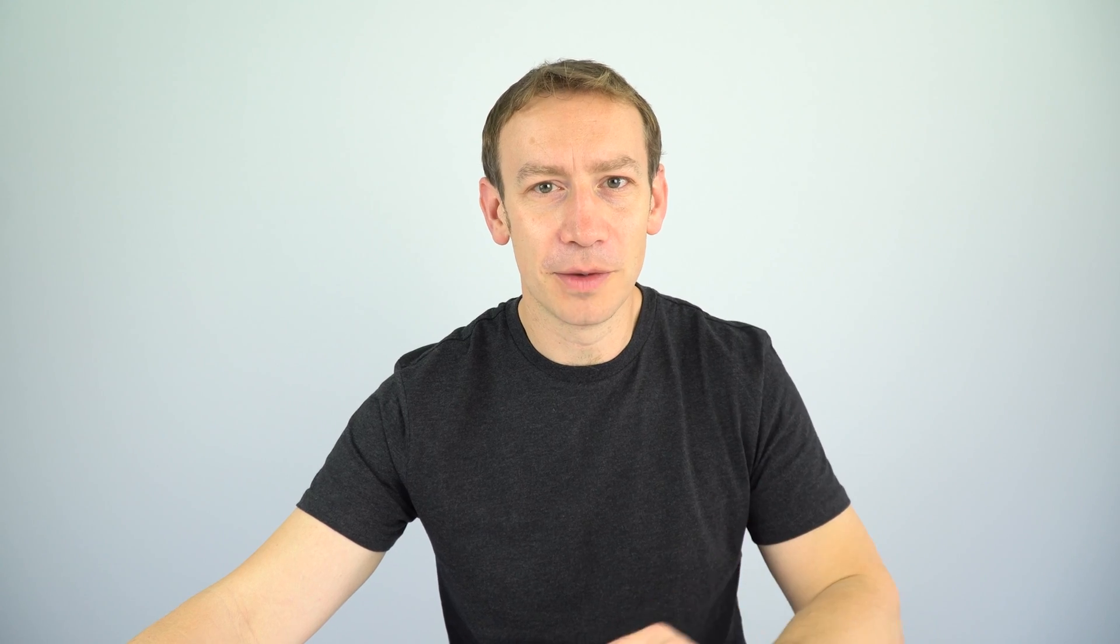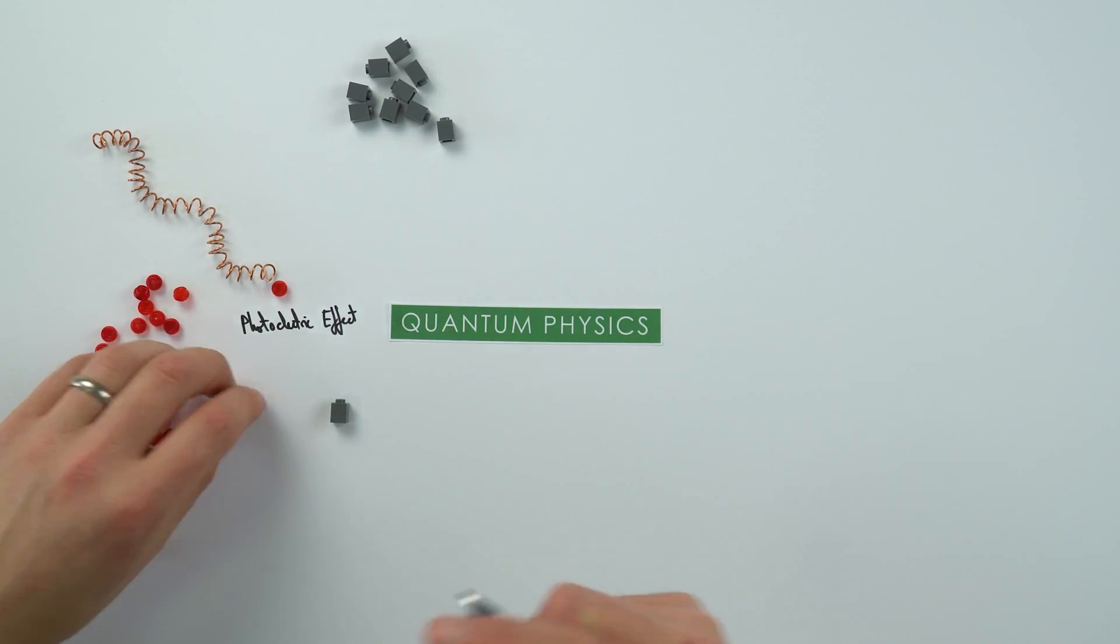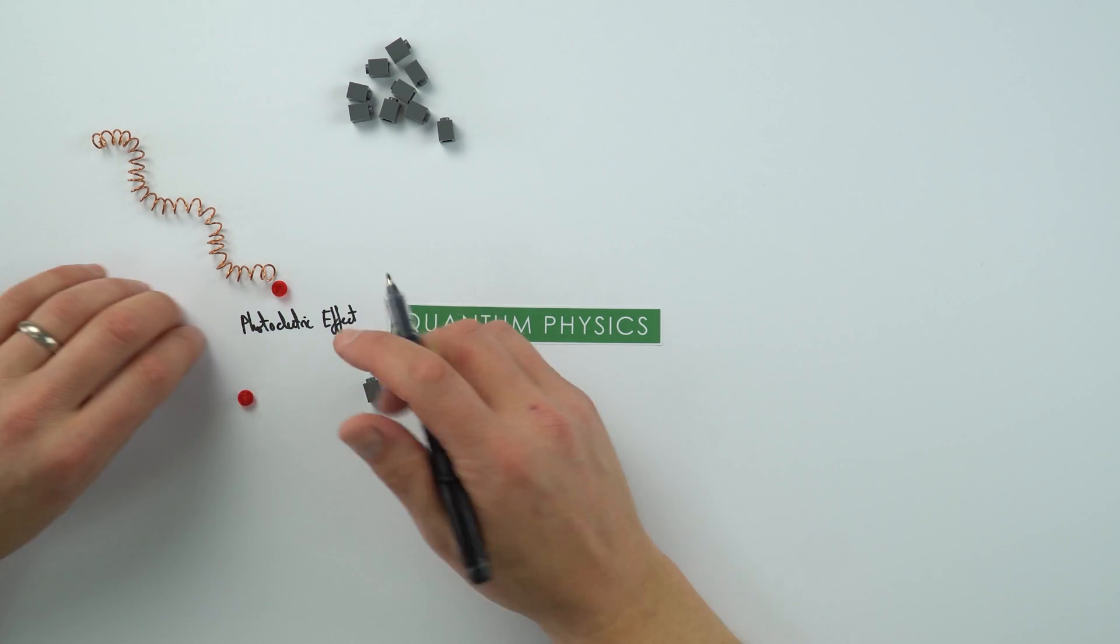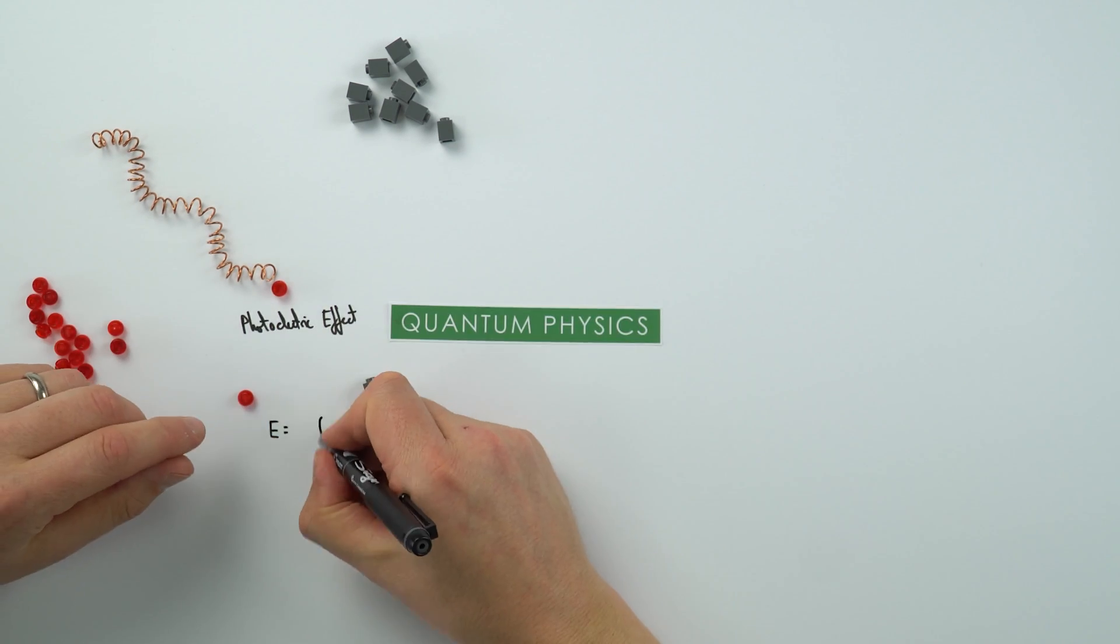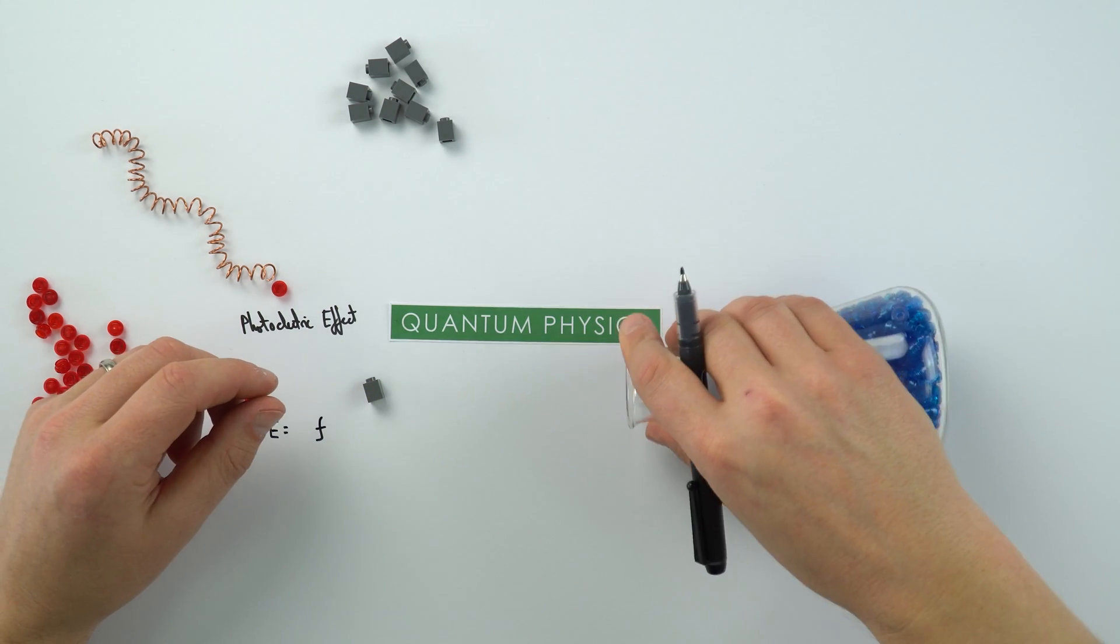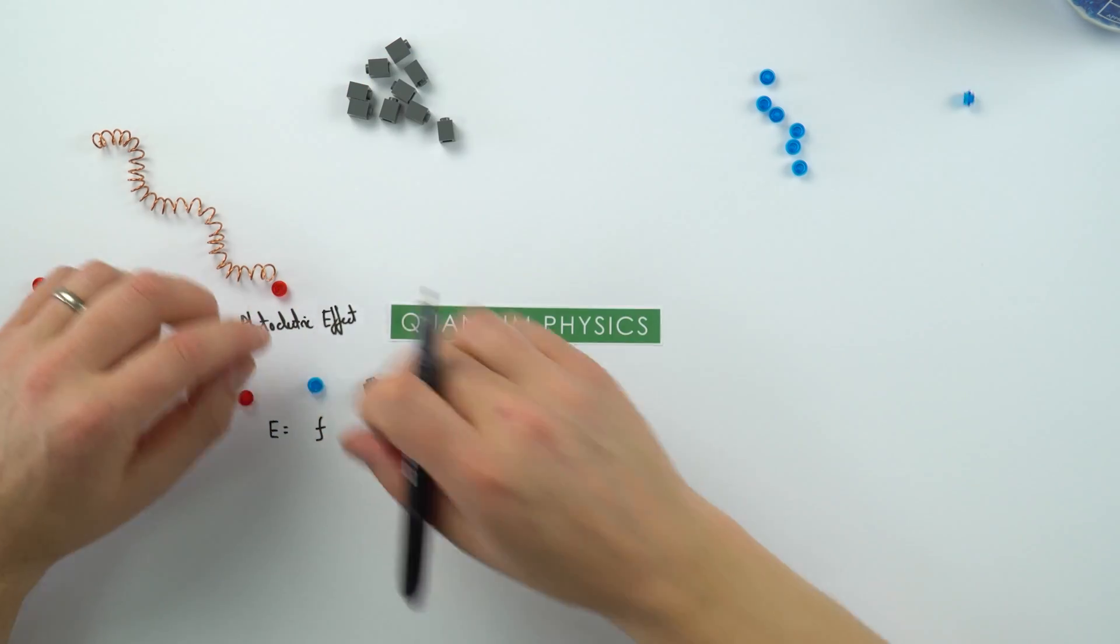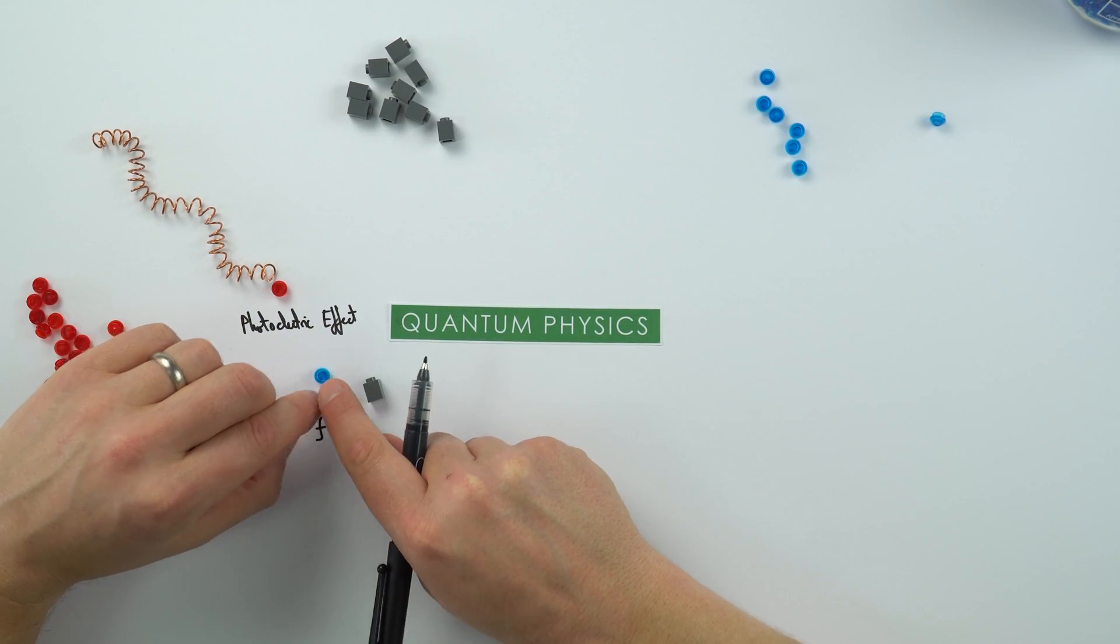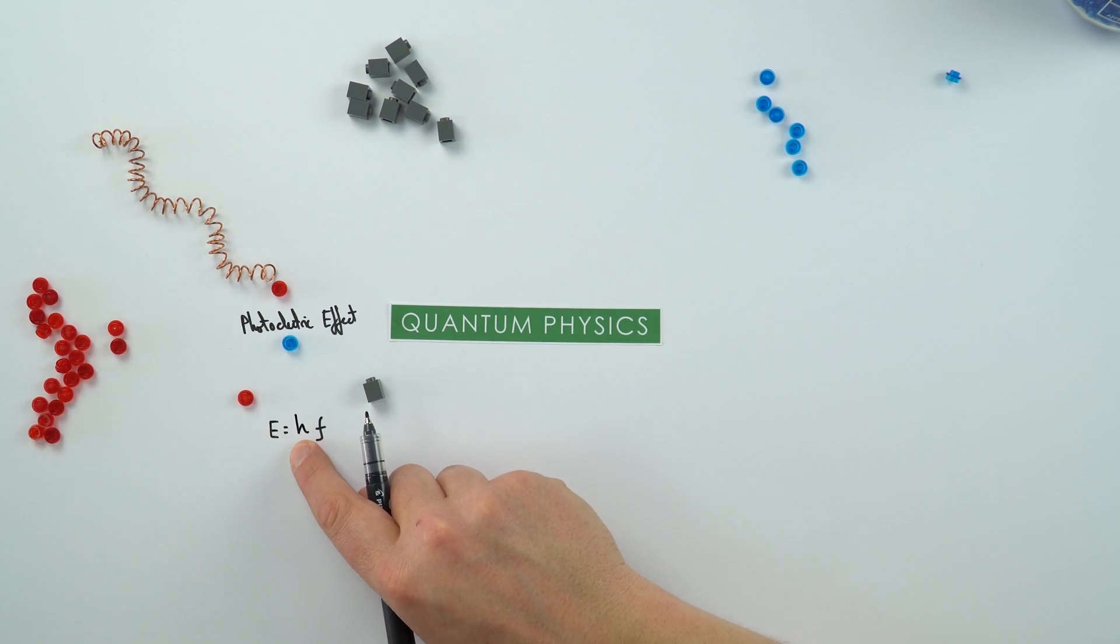A packet of energy and therefore a particle, and here I've got what we call photons. Now the energy of a photon of light is equal or is proportional to the frequency. So when you've got something which is a higher frequency, perhaps we have some blue light over here, these blue photons have a higher frequency and a corresponding higher energy. And we say that E is equal to hf, where h is just a constant.